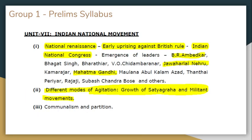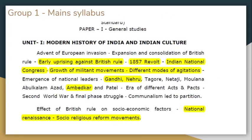We are going to read this chapter. In Unit 7, Indian National Movement, the emergence of leaders — Ambedkar, Jawaharlal Nehru, Mahatma Gandhi — and different modes of resistance, growth of Satyagraha and the militant movement are covered.